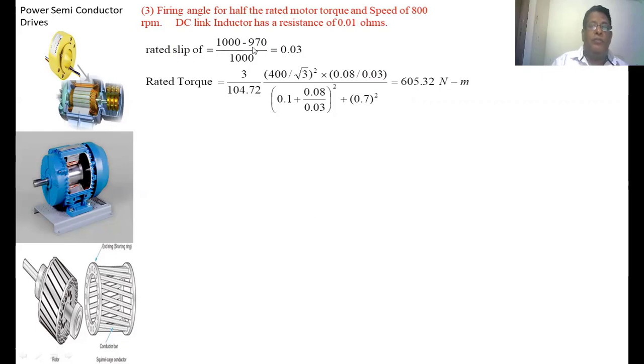Slip at full load = (1000 - 970)/1000 = 0.03. The full load torque, or rated torque = (3/ωs)·V²·(Rr'/S)/[(Rs + Rr'/S)² + (Xs + Xr')²]. Substituting all values, we get the rated torque = 605.32 N-m.